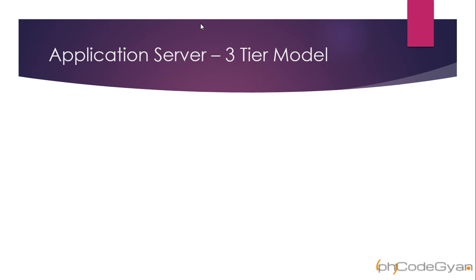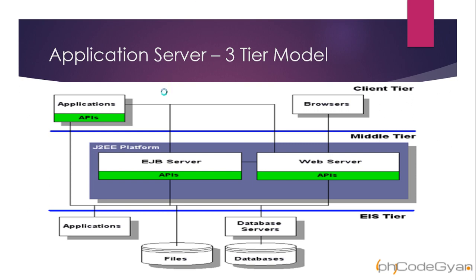The application server's role is to implement the business logic through EJB (Enterprise Java Beans) or other frameworks available with the application server. It is a component-based product that lies in the middle tier of a service-centric architecture. This is our three-tier model: the first tier is the client tier, consisting of applications and browsers. The middle tier consists of a J2EE platform with an EJB server — this is the application server. The third layer is the EIS tier, consisting of databases, files, and other applications.